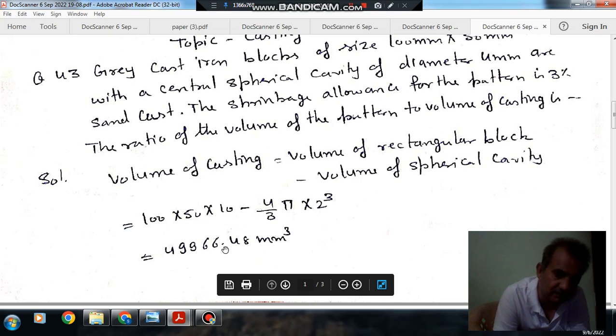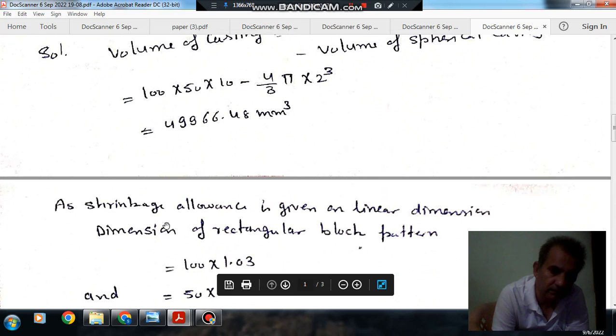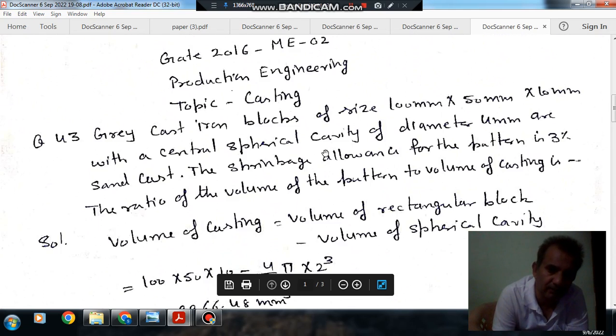So that is 49966.48 mm³. Now the shrinkage allowance is given on linear dimension. As the linear dimension for casting is 100 mm x 50 mm.